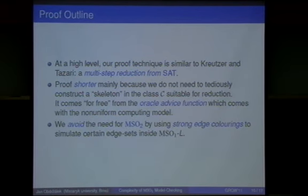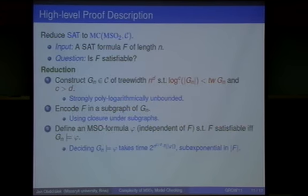Why is the proof shorter? We don't need the complicated machinery they use because we have the advice, which gives us the sub-exponential advice, which gives us basically the skeleton of the graph in which we encode everything. This saves lots of pages, maybe eight pages. We also avoid the use of MSO2 because we do not need to talk about edges or sets of edges. We use strong edge colorings, which allow us to talk about vertices and think about edges.